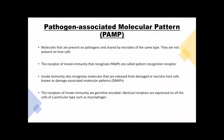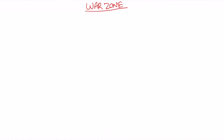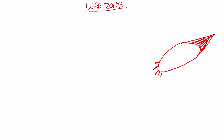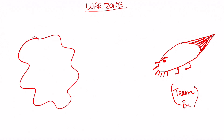Now, before we go through this slide, let me take you to the whiteboard. I'm going to name this whiteboard as the warzone. We have two teams here. Let me draw team A, which is team bacteria. Now of course we have the opposing team — the team that I support — this is team macrophage.